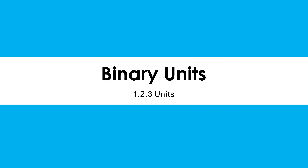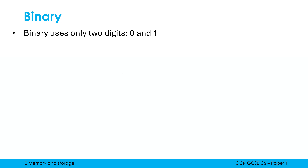Let's go through the most quintessentially computer science topic which is binary and talk about the binary units. Binary itself is a numbering system. Humans use a numbering system called denary which uses 10 digits. Binary only uses two digits, which happen to be chosen to be zero and one.